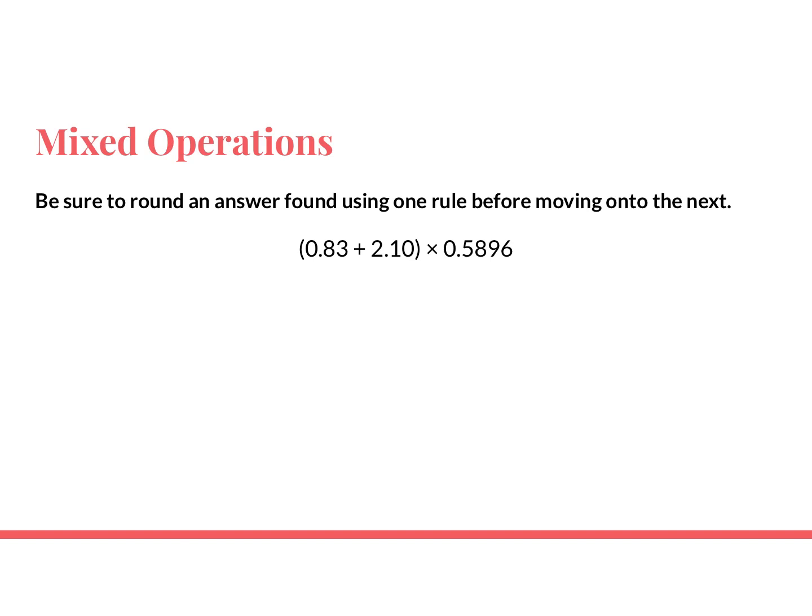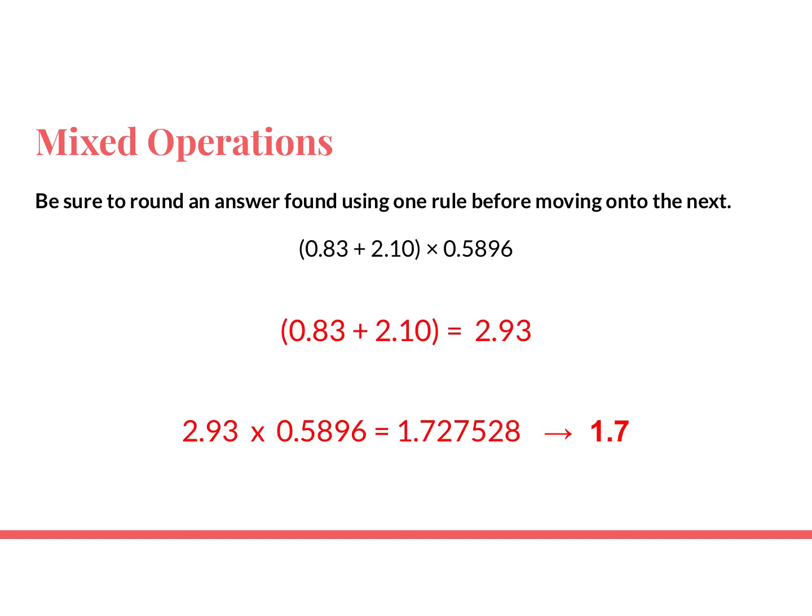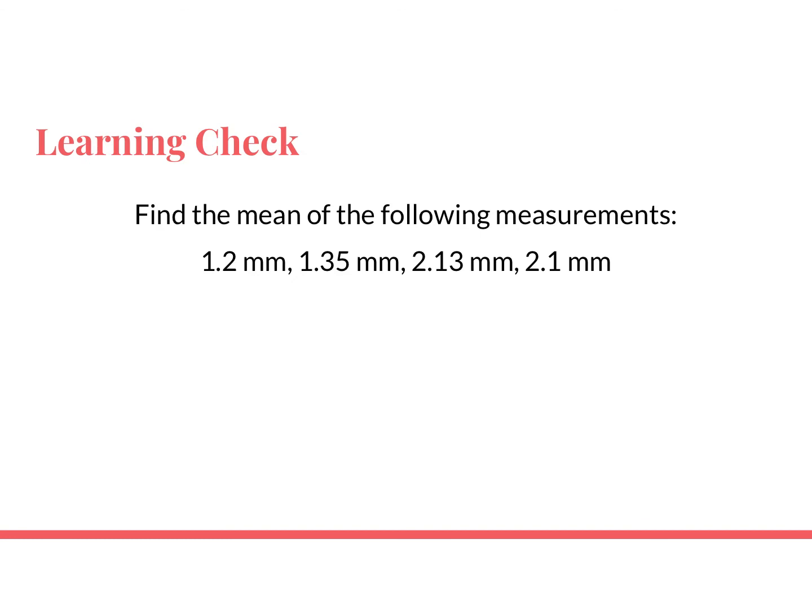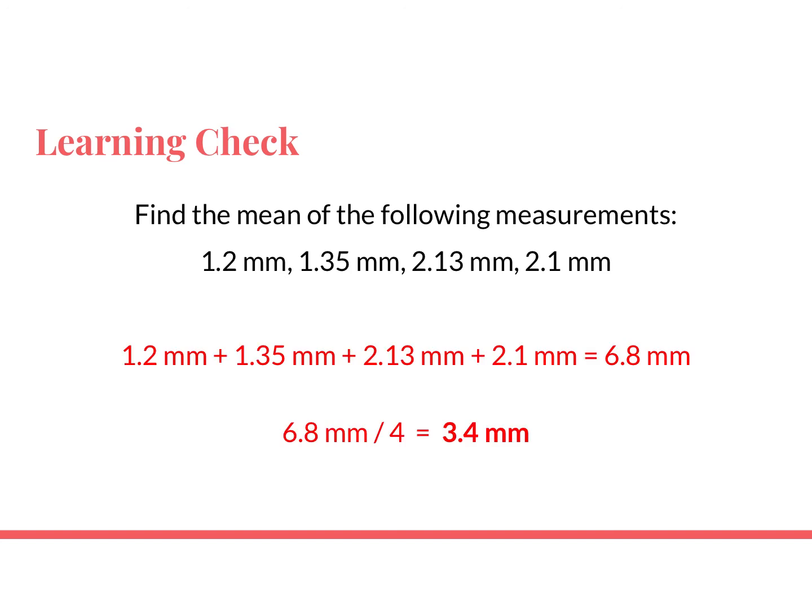For mixed operations, go step by step. First do what's in the parentheses, then move on to the multiplication, rounding at each step. First I add the two numbers together — that gives 29.3, and since addition is about decimal places that answer is fine. Then I multiply by 0.5896, and I round the result to two decimal places. To find the mean of three numbers: I add them up using addition rules, going to one decimal place to get 6.8 mL, then divide by 4 — but 4 is an exact count so it doesn't affect sig figs — giving a final answer of 3.4 mL.